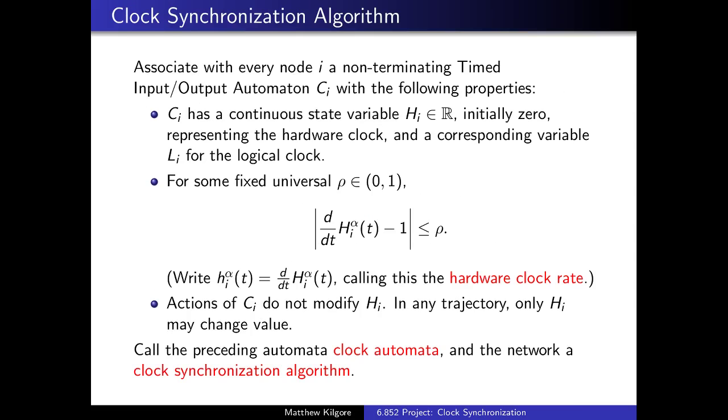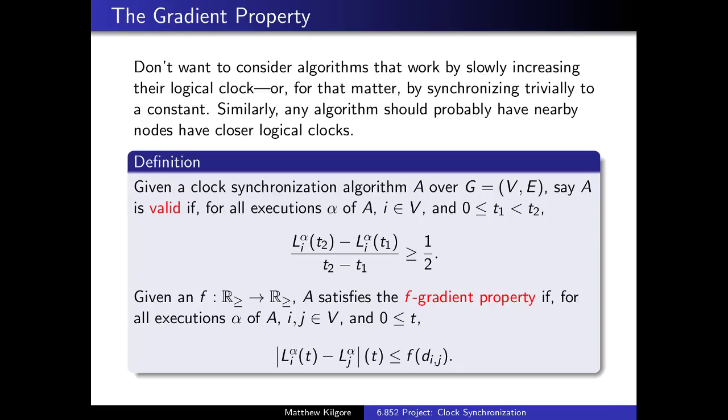The weight will be the distance when we add clock automata to each node. Clock automata is just a TIOA where there is a continuous state variable H_i representing the hardware clock, and a corresponding variable L_i for the logical clock. For some fixed universal rho in (0,1), we require d/dt H_i(t) - 1 ≤ ρ, calling this the hardware clock rate. Actions do not modify H_i. In any trajectory, only H_i may change.